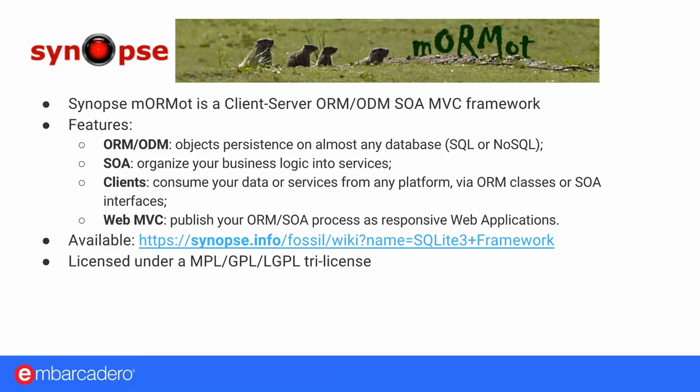mORMot — I'm not sure if I'm pronouncing it right, but it's like Marmot with an O instead of an A, which is why they use a marmot as their mascot. It's an ORM persistence framework that works against any database to build service-oriented architecture. It has some client technology and is licensed under an MPL/GPL/LGPL tri-license. Visit synopse.info for more information.